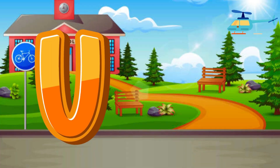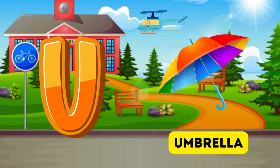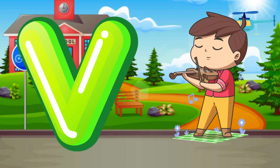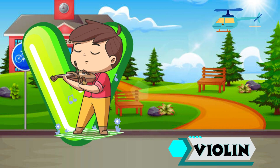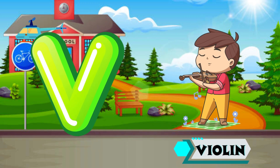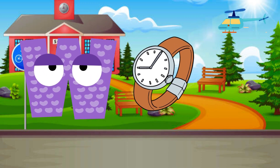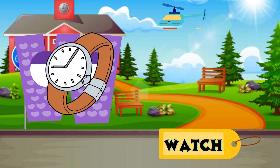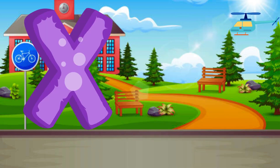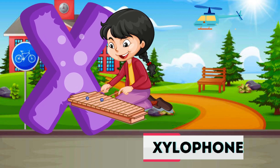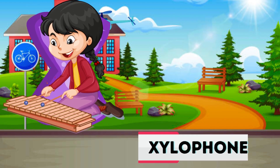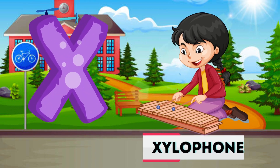U is for Umbrella, U-U-Umbrella. V is for Violin, V-V-Violin. W is for Watch, W-W-Watch. X is for Xylophone, X-X-Xylophone.